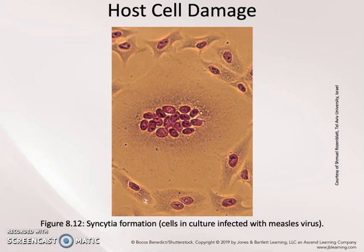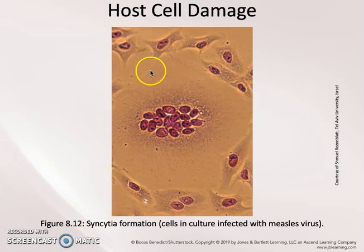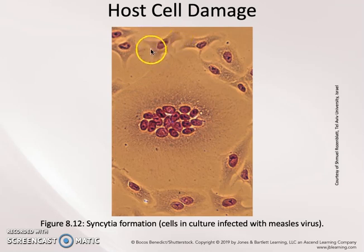These giant multinucleated cells are thought to be how viruses can spread from cell to cell more easily. An example of one of these giant multinucleated cells can be seen here as a consequence of measles virus infection, with smaller cells with single nuclei surrounding it.